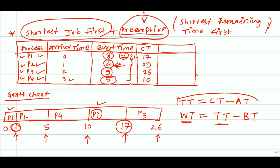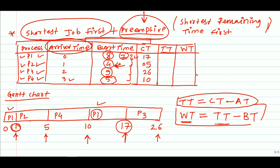Turnaround time equals completion time minus arrival time. For P1: 17 − 0 = 17. For P2: 5 − 1 = 4. For P3: 26 − 2 = 24. For P4: 10 − 3 = 7. These are the turnaround times for all four processes.